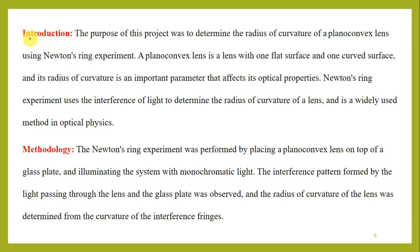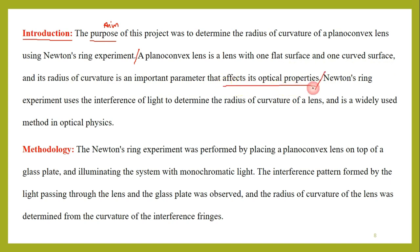We have to write the introduction. Introduction will provide the purpose of the project: 'The purpose of the project was to determine the radius of curvature of a plano-convex lens using Newton's ring experiment.' Then we define what a plano-convex lens is: a lens with one flat surface and one curved surface, whose radius of curvature is an important parameter that affects its optical properties. Newton's ring experiment uses the interference of light to determine the radius of curvature of a lens and is a widely used method in optical physics.